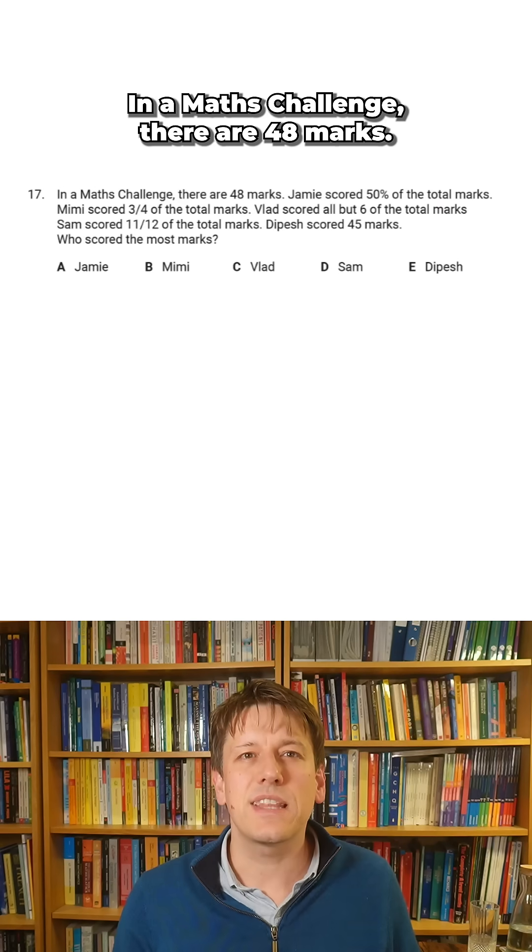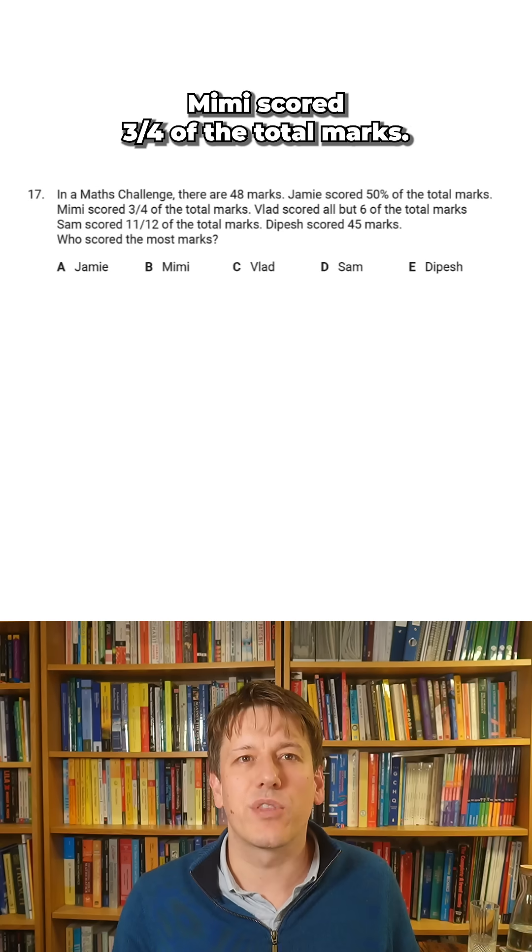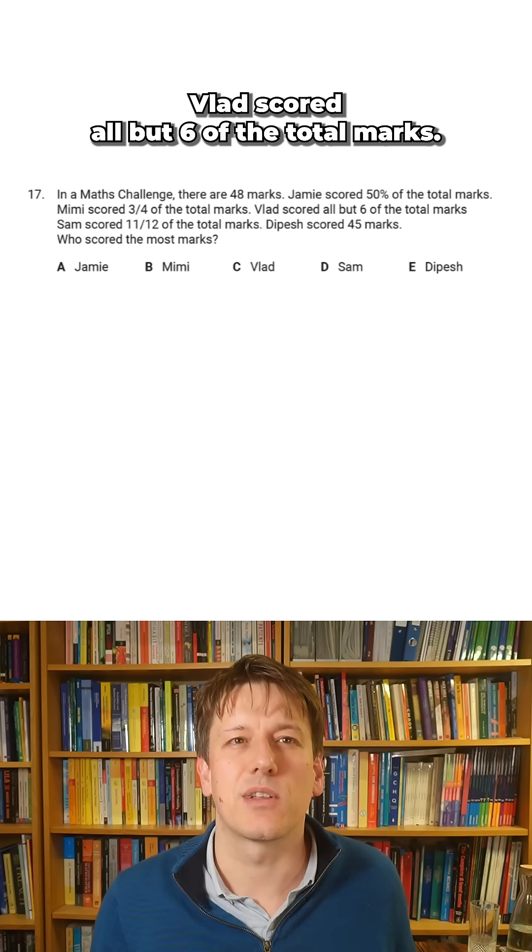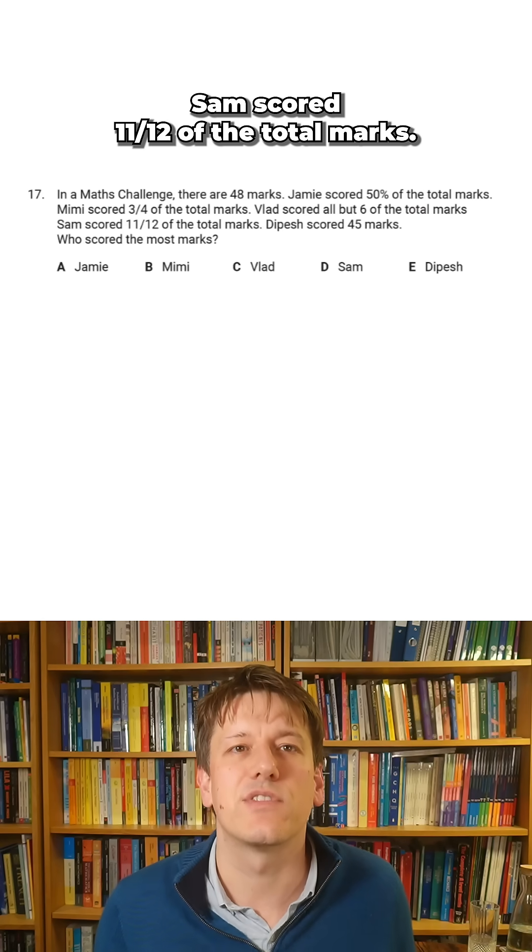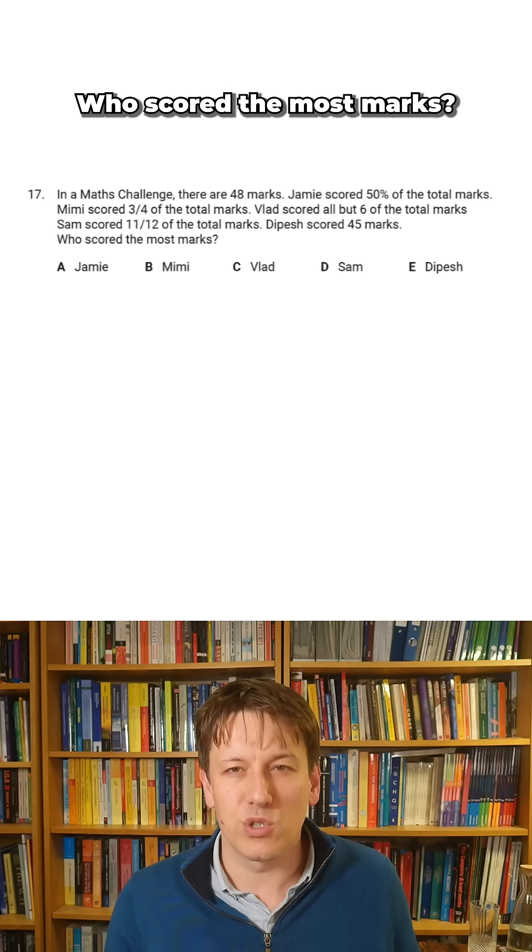Here's question 17. In a maths challenge, there are 48 marks. Jamie scored 50% of the total marks. Mimi scored three quarters of the total marks. Vlad scored all but six of the total marks. Sam scored 11 twelfths of the total marks. And Dipesh scored 45 marks. Who scored the most marks?